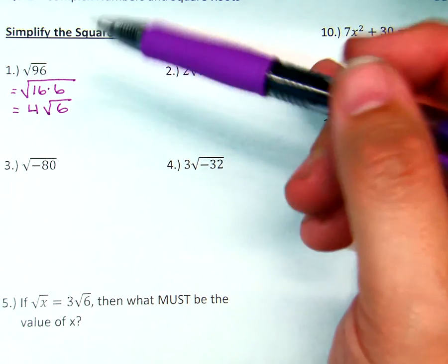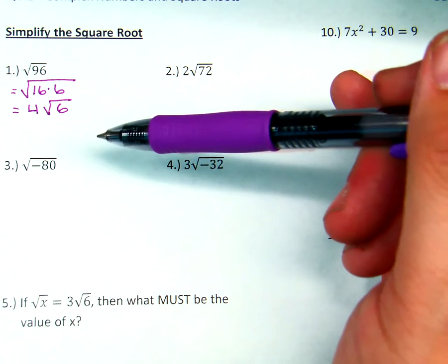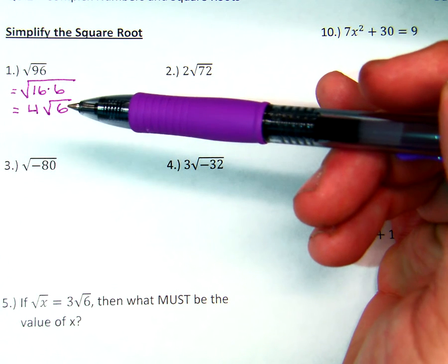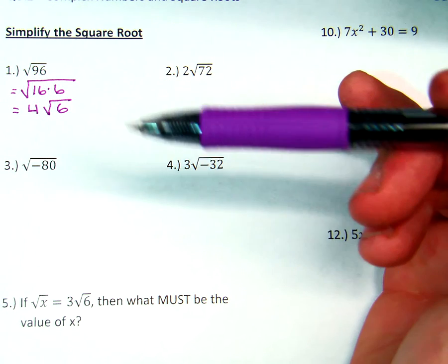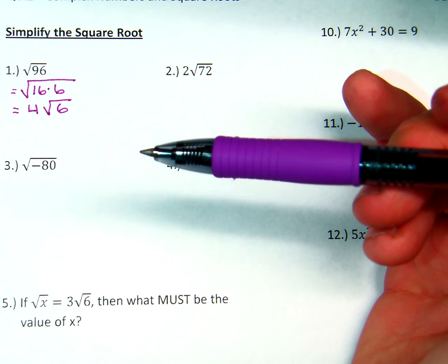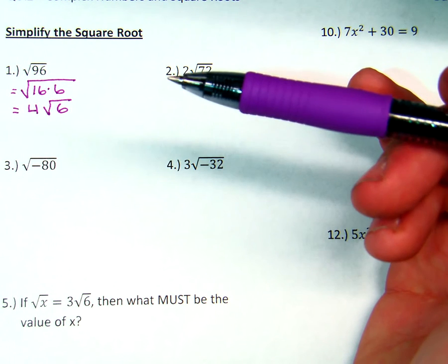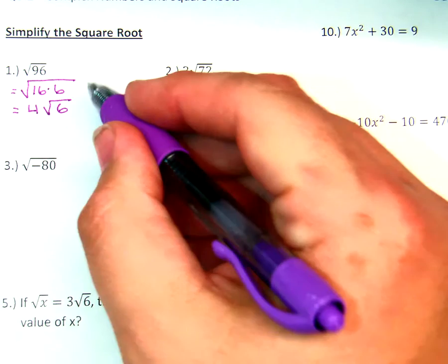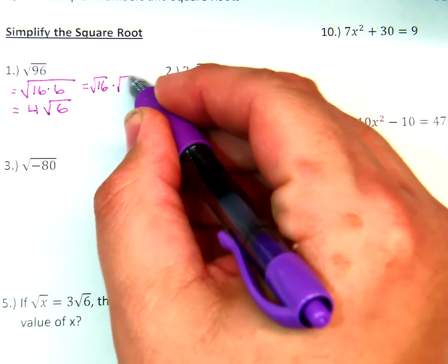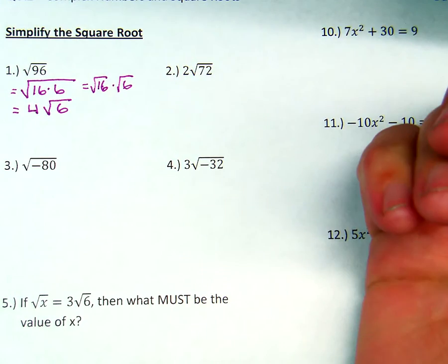You need to break this down into a perfect square times another number. You can do 8 times 12, but none of those are perfect squares. So the square root of 8 — we don't know. The square root of 12 — we don't know. But the square root of 16 times the square root of 6: the square root of 16 is 4, so it works out.